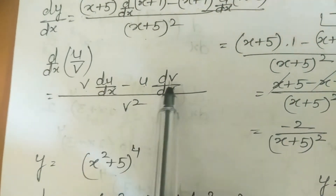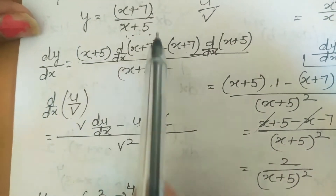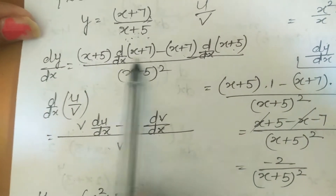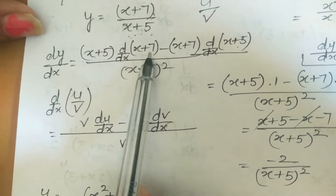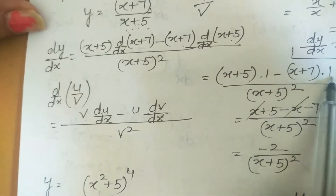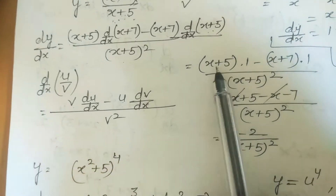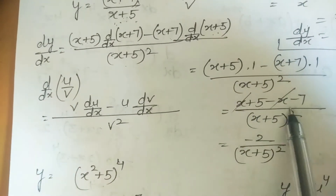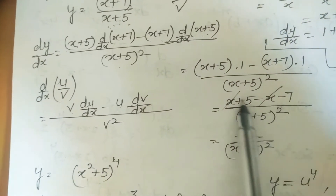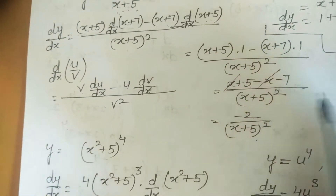Derivative of (x+7) is 1 and derivative of (x+5) is 1. So: [(x+5)·1 − (x+7)·1] / (x+5)² = [x+5−x−7] / (x+5)² = −2/(x+5)². This is the answer.